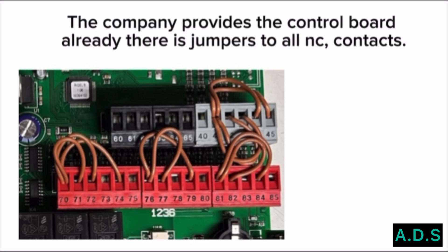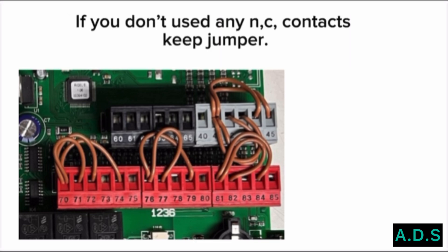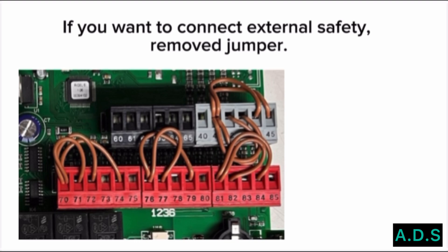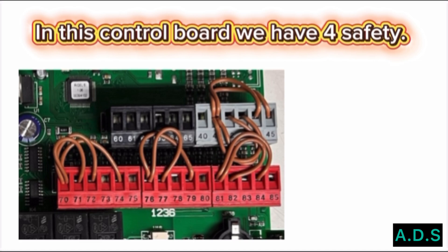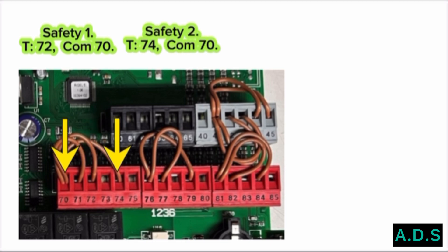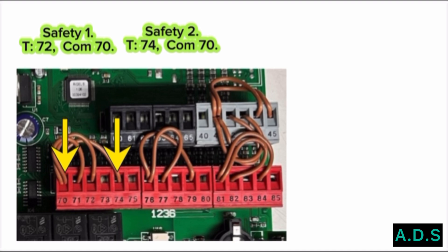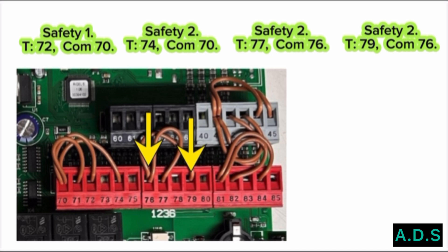The company provides the control board already fitted with jumpers to all NC contacts. If you don't use any NC contacts, keep the jumper. If you want to connect an external safety device, remove the jumper. This control board has four safety inputs: Safety 1 is terminal 72 with common 70. Safety 2 is terminal 74 with common 70. Safety 3 is terminal 77 with common 76. Safety 4 is terminal 79 with common 76.